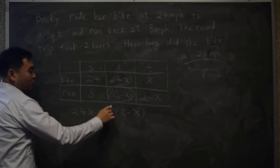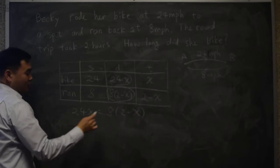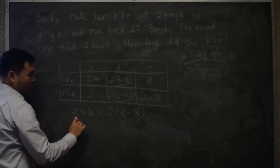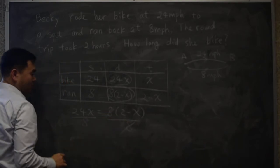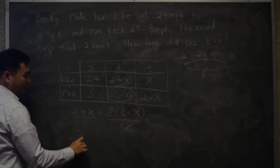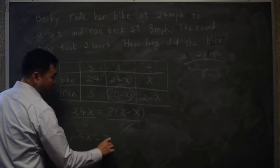You could also just multiply this out and solve, but let's take a shortcut. I think we can divide by 8 to make it simpler. So 24 divided by 8 is 3x, 3x is equal to 2 minus x.